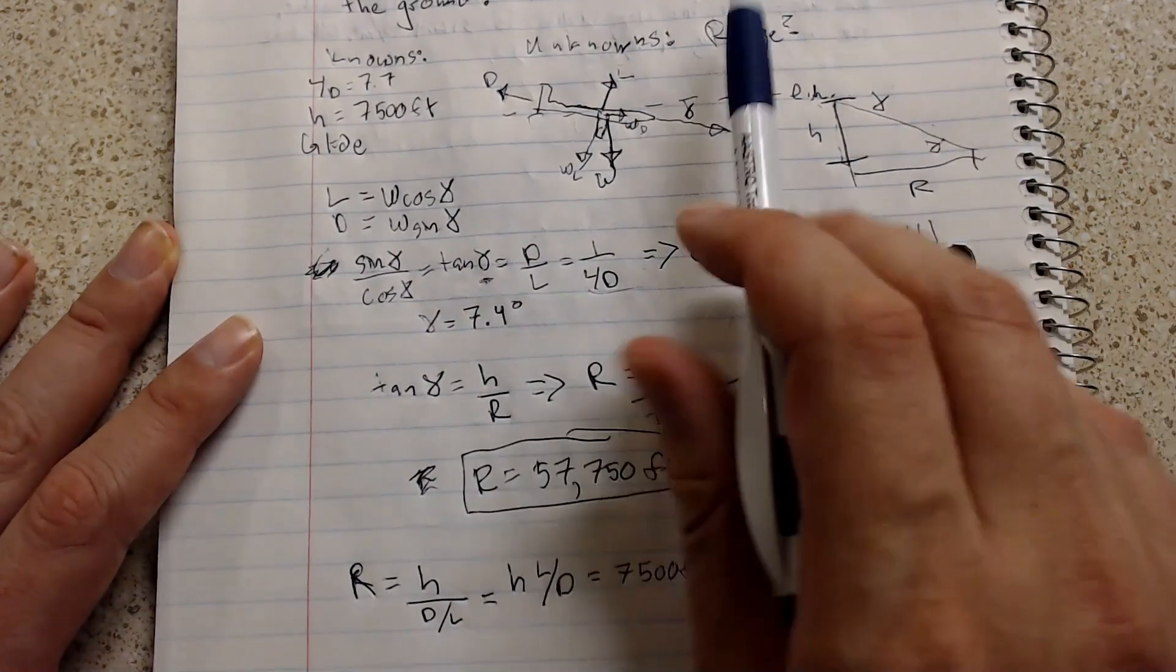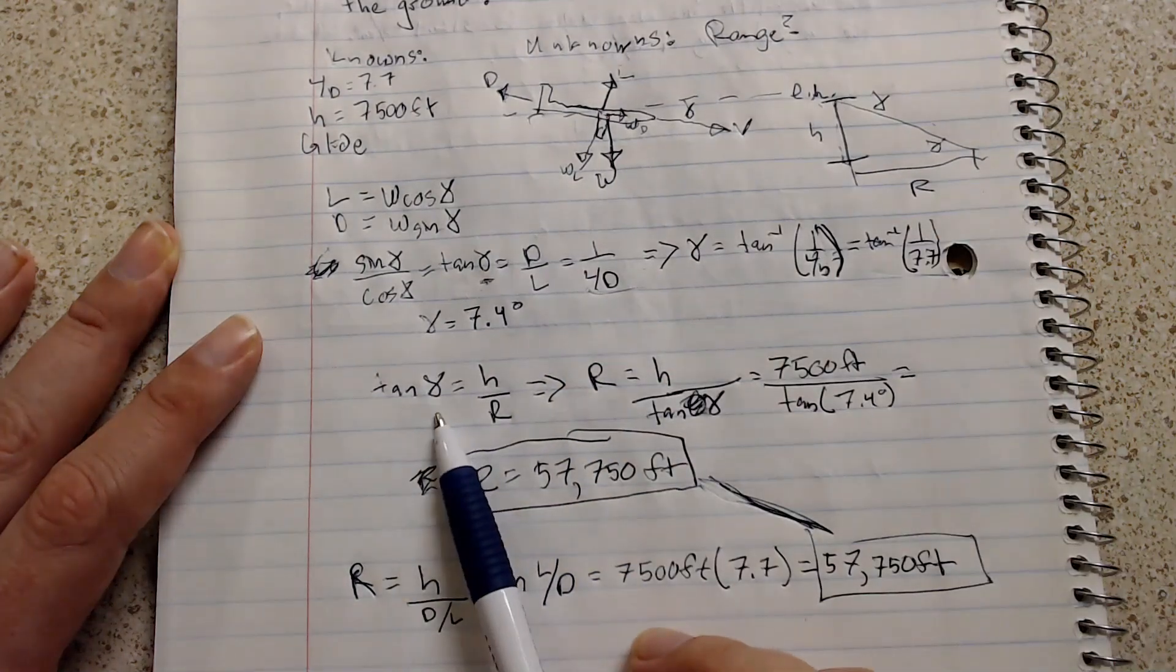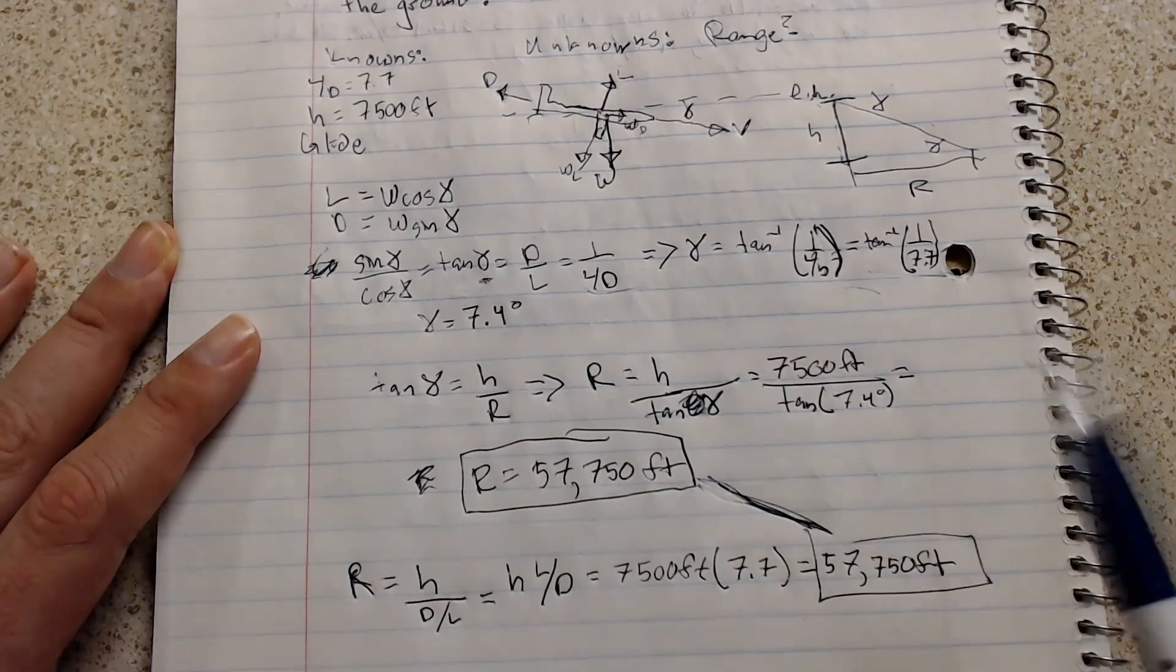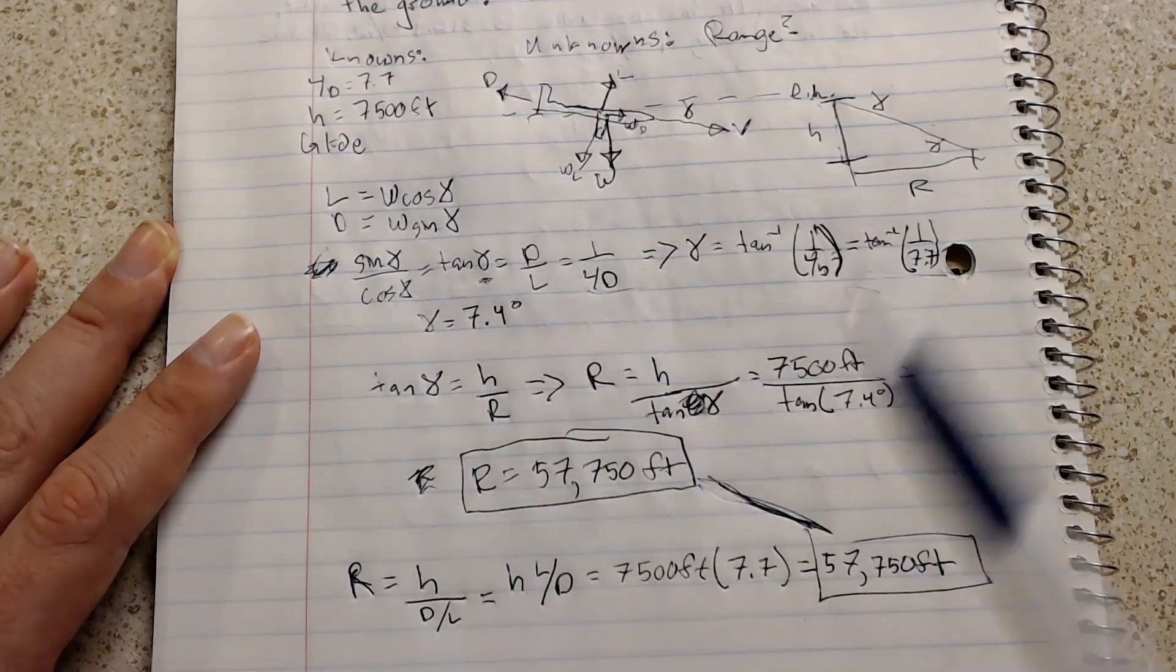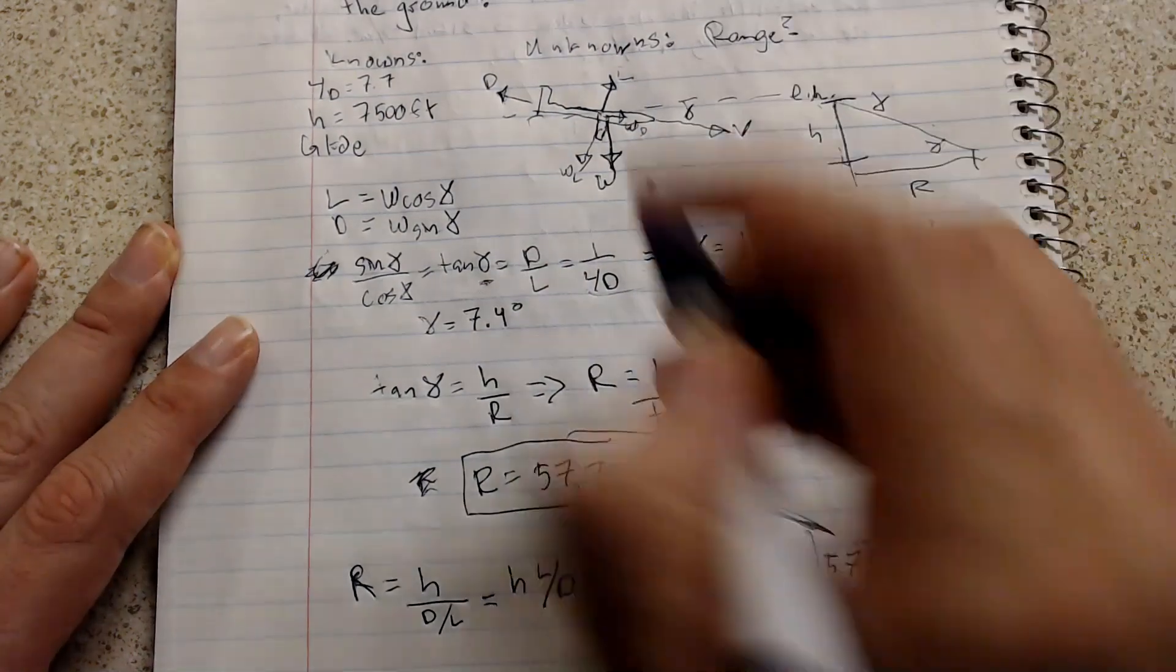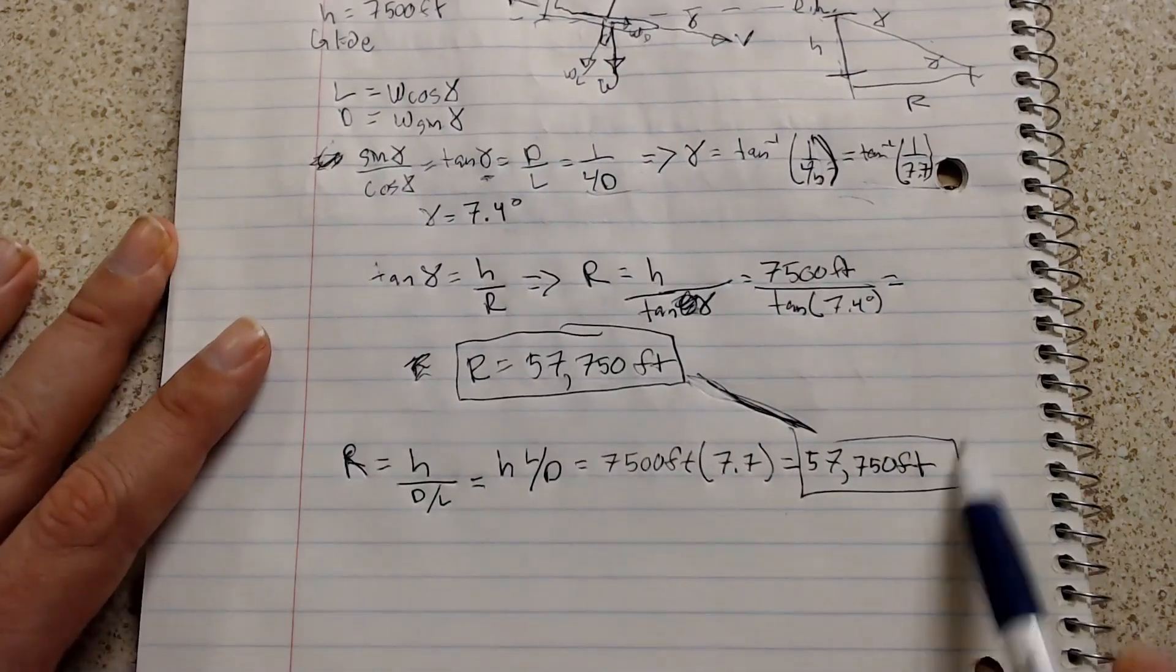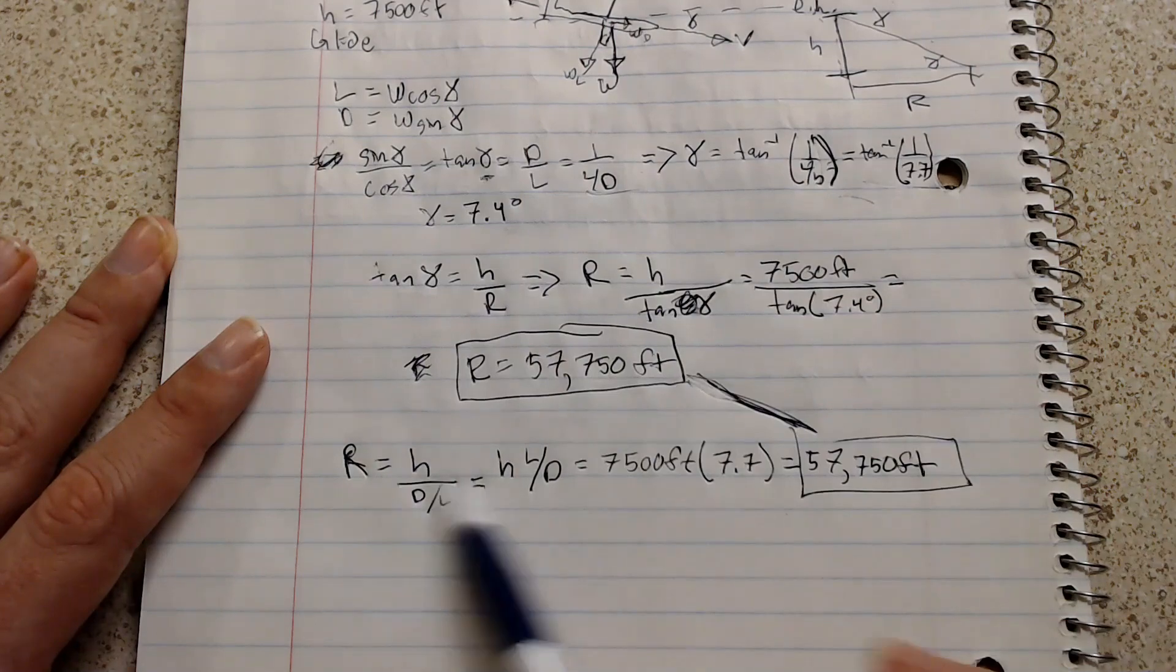Now, if your problem statement asks what the flight path angle is, then I would suggest using this first method. If it doesn't care what your flight path angle is, like for instance, this one only asked what the distance was, it doesn't say what is the flight path angle. So in that case, I would recommend using this second one, because you can avoid this intermediate step and just go straight to the answer.